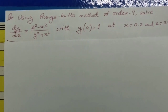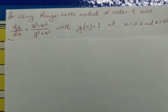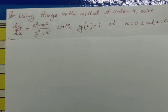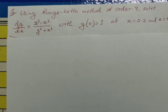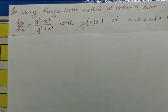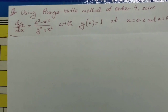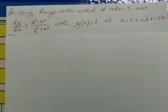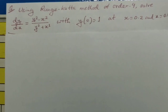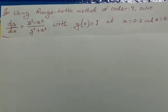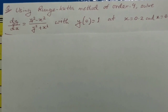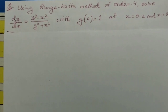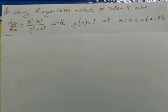Hello everyone. In this video we are going to discuss a problem which will be solved using the Runge-Kutta method of order 4. The question is: using the Runge-Kutta method of order 4, solve dy/dx = (y² - x²) / (y² + x²), with y(0) = 1, at x = 0.2 and x = 0.4.